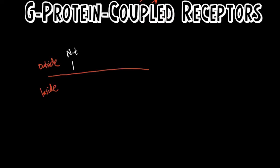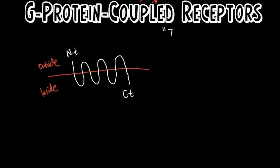Starting on the outside, we have one, two, three, four, five, six, seven, landing on the inside of the cell with a C-terminal. Because GPCRs cross the membrane of the cell seven times, they are also known as seven transmembrane receptors, or 7TM for short.